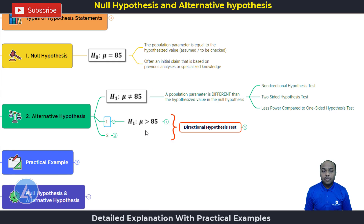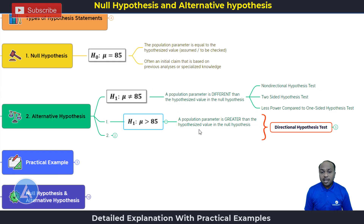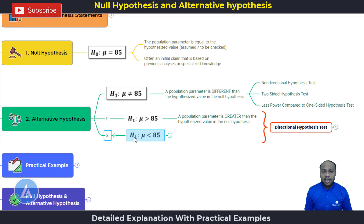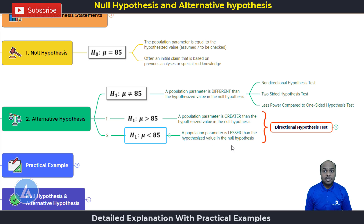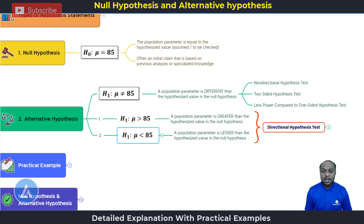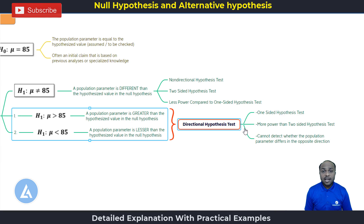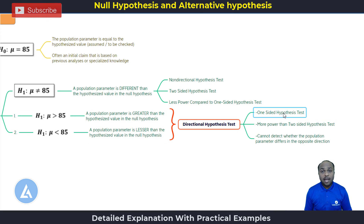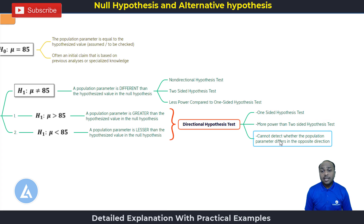The second statement is H1 colon mu is greater than 85, indicating the population parameter is greater than the hypothesis value in the null hypothesis. The third statement is H1 colon mu is less than 85, meaning the population parameter is lesser than the hypothesis value. Both of these tests are called directional hypothesis tests, also known as one-sided hypothesis tests. These have more power compared to the two-sided hypothesis test, but they cannot detect whether the population parameter differs in the opposite direction. So depending on intent, we select the appropriate alternative hypothesis.